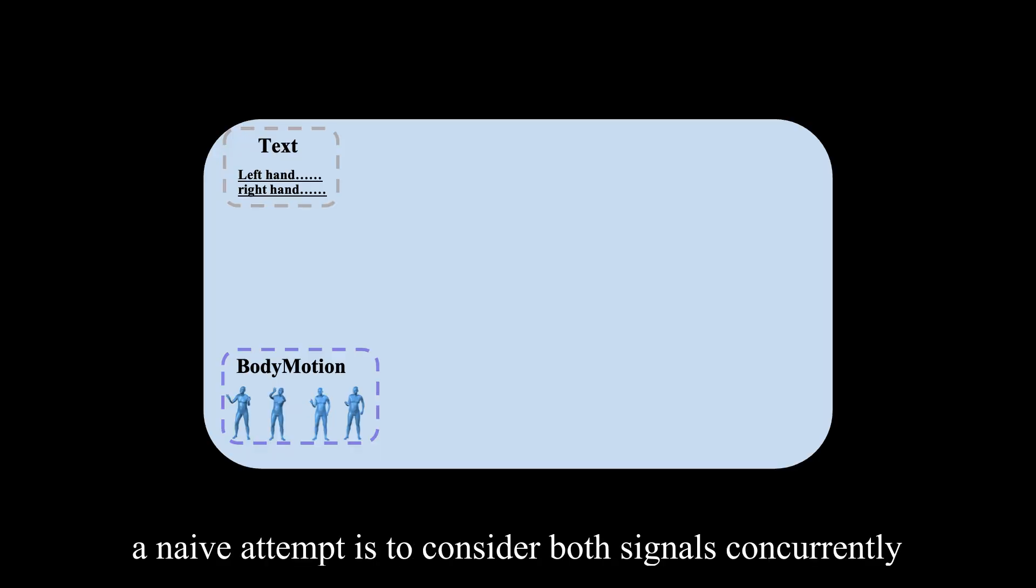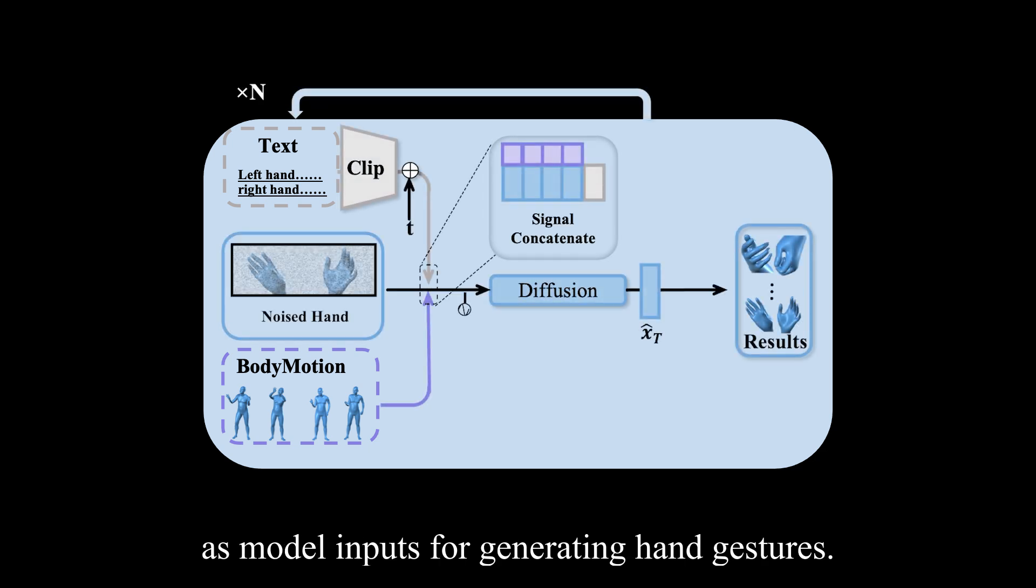For the novel task, a naive attempt is to consider both signals concurrently as model inputs for generating hand gestures.